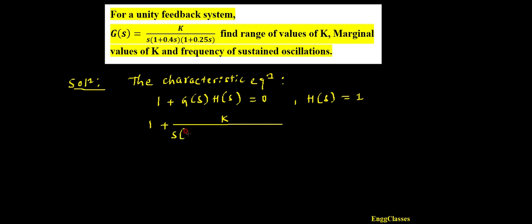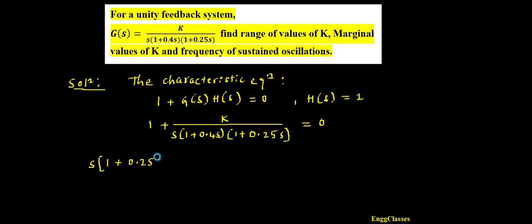Expanding the denominator: s × (1 + 0.25s) × (1 + 0.25s). Multiplying the bracket terms: 1×1 = 1, then 1×0.25s = 0.25s, plus 0.4s, then 0.4 × 0.25 = 0.1s². So the denominator expands to s(1 + 0.65s + 0.1s²), giving us the characteristic equation: 0.1s³ + 0.65s² + s + k = 0.